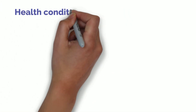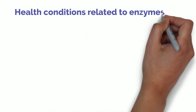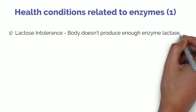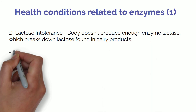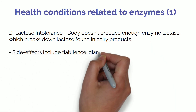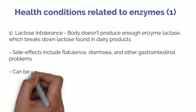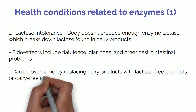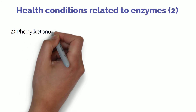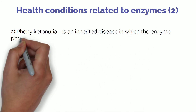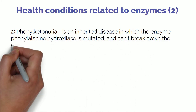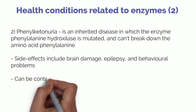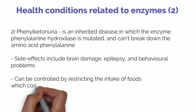Now let's look at some diseases and how enzymes are involved, either as the cause or the solution. Lactose intolerance is extremely common and happens when the body doesn't produce enough of the enzyme lactase, which breaks down lactose — the main sugar in milk and dairy products. When lactose is not broken down, it is fermented by gut bacteria, leading to flatulence, diarrhoea, and other symptoms. This can be managed by replacing dairy with lactose-free or dairy-free alternatives. Phenylketonuria is an inherited disease in which the enzyme phenylalanine hydroxylase is mutated and cannot break down the amino acid phenylalanine, potentially causing brain damage, epilepsy, and behavioural problems. It can be controlled by restricting intake of foods containing this amino acid.